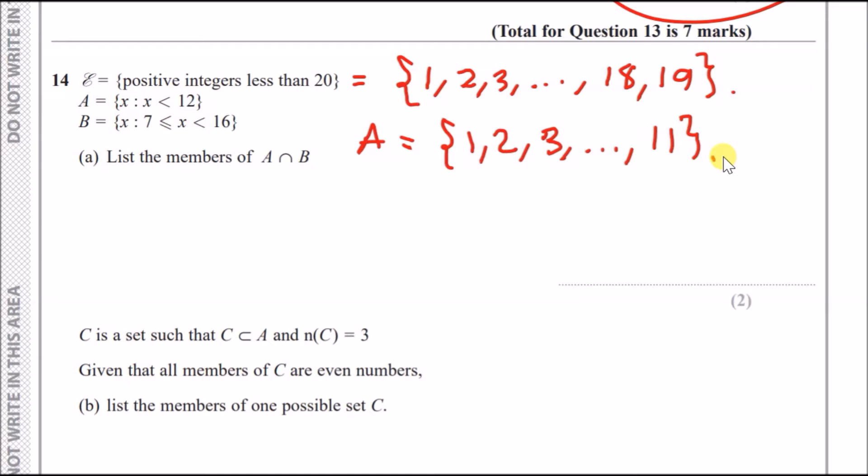Second one, we have set A, which is part of the universal set. It's all x values less than 12. So we can say A is basically 1, 2, 3, all the way up to 12, so up to 11. And for set B, it's between 7 and 16, but includes 7. So it's going to be 7, 8, 9, dot dot dot, all the way up to 15. Remember, it doesn't include 16.